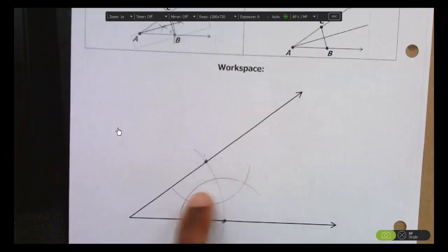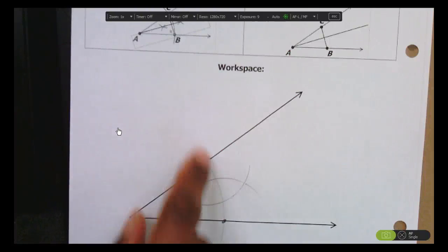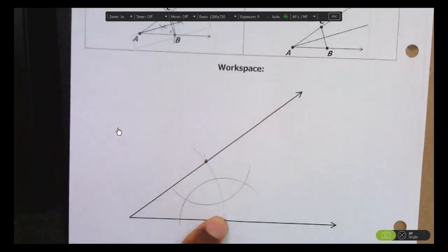So that little fish looking thing right there, that little plankton guy, that shows you where the bisector is going to be. It's the perpendicular bisector of the two intersection points, but it's also the angle bisector.